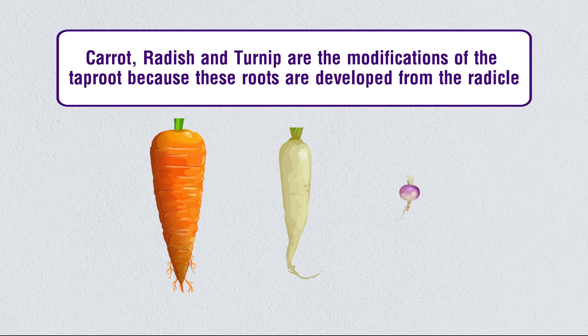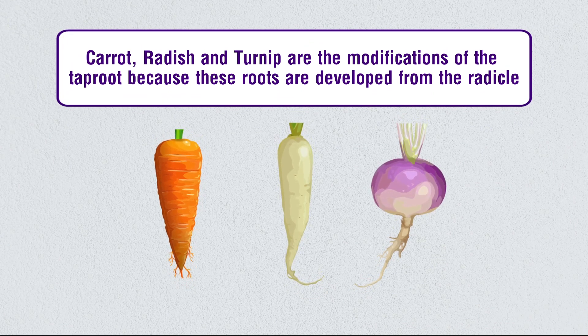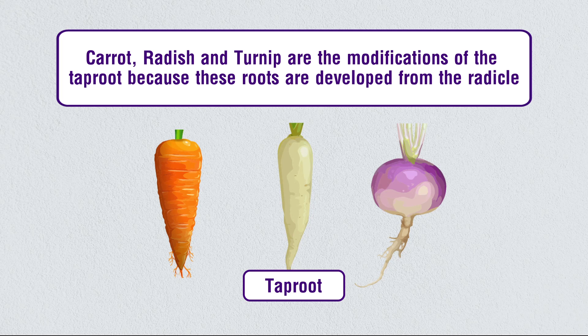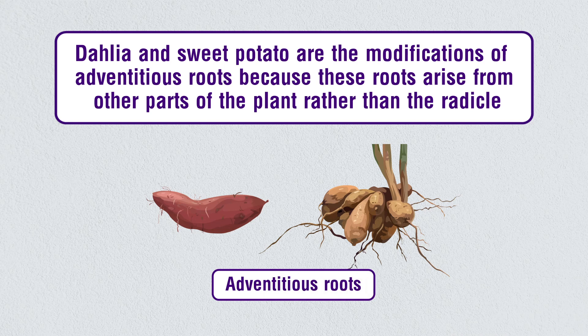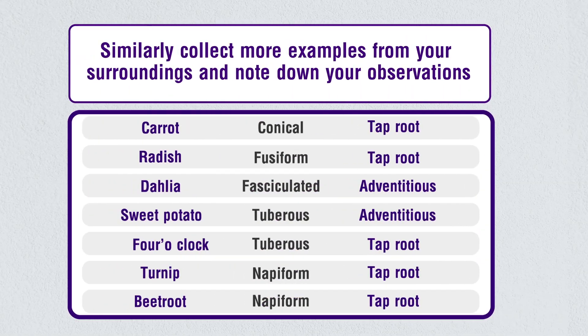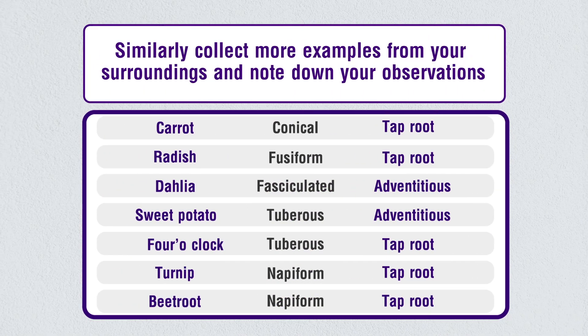Carrot, radish, and turnip are modifications of the tap root, because these roots are developed from the radicle. Dahlia and sweet potato are modifications of adventitious roots, because these roots arise from other parts of the plant rather than the radicle. Similarly, collect more examples from your surroundings and note down your observations.